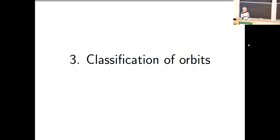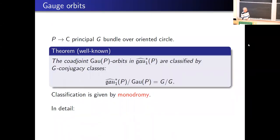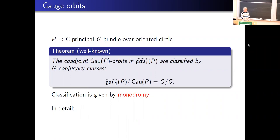Now I want to talk about classification of orbits, developing the Virasoro story parallel to the loop group story. Let's recall the classification of coadjoint orbits of the loop group in the slightly more general setting of a principal bundle over an abstract circle, not necessarily the trivial bundle. It's a well-known fact that gauge orbits in the dual of the Lie algebra at level one — the space of connections — are classified by conjugacy classes in the group.